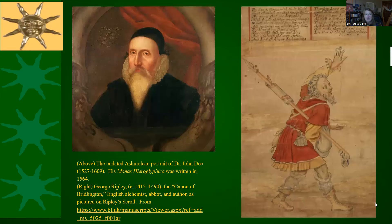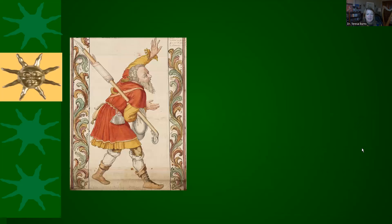Here's John Dee — you know this guy — and over here is George Ripley. This is a picture of George Ripley from another of his works called Ripley's Scroll, which is a fascinating work of physical alchemy. And here's the same picture of Ripley all prettied up by someone for Wikipedia.